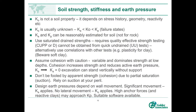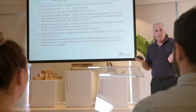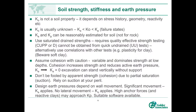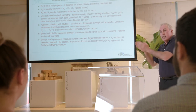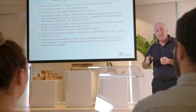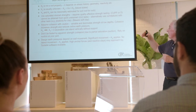I wanted to help you understand what these earth pressure coefficients mean. K0, the earth pressure coefficient at rest, is not a soil property — the same soil in a different situation will have a different K0. It depends on stress history, geometry, reactivity of the clay and many other things. It is usually unknown, but it's important we try to estimate it because it defines how much movement we're going to have. It lies somewhere between Ka and Kp, which are the failure states. Ka and Kp, on the other hand, can be reasonably estimated for a soil, though it's very hard to estimate for a rock because of discontinuities, bedding planes, fractures, and joints.